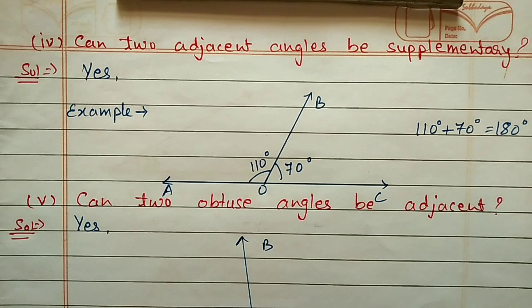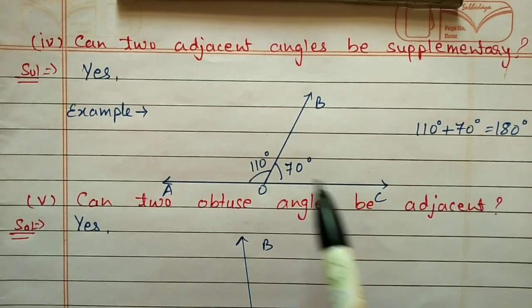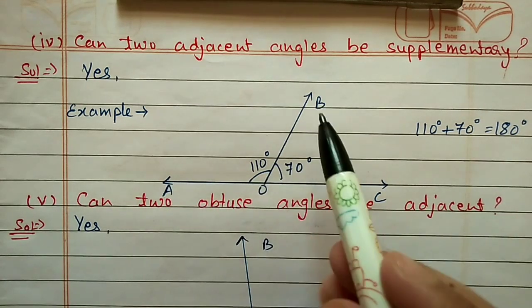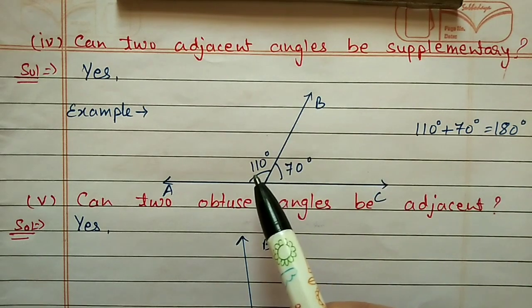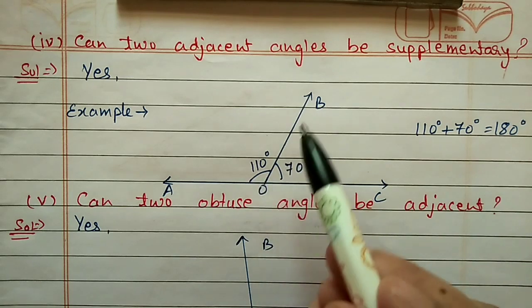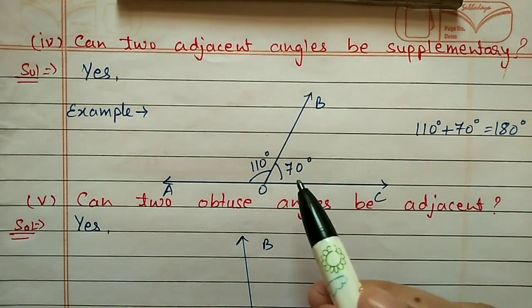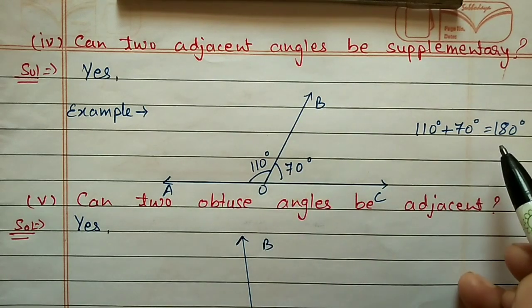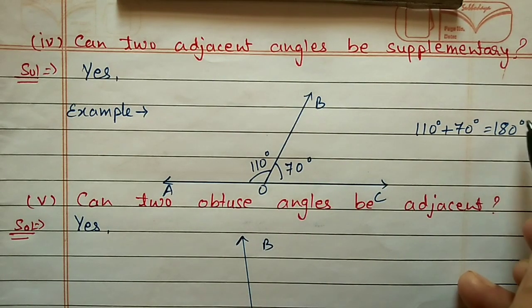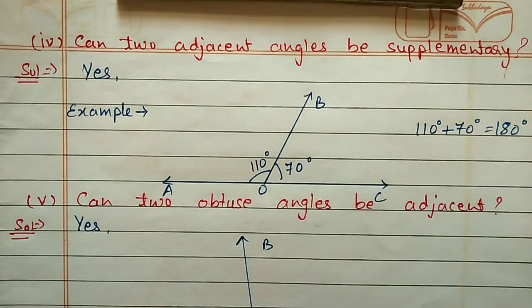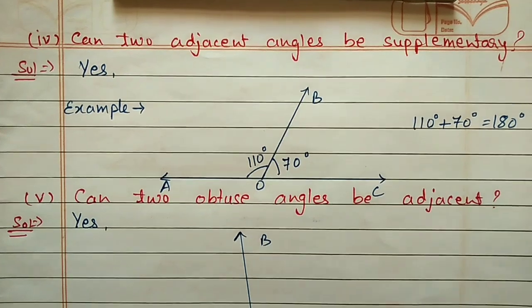Fourth part: can two adjacent angles be supplementary? I have taken an example with two adjacent angles, angle AOB and angle BOC. Angle AOB is 110 degrees and angle BOC is 70 degrees. If I add these two angles, 110 plus 70, it comes equal to 180 degrees.